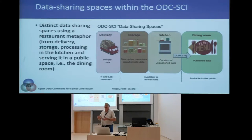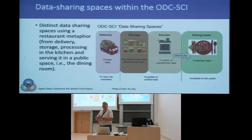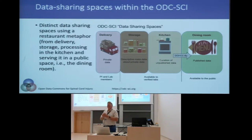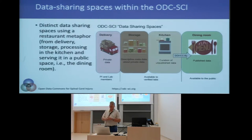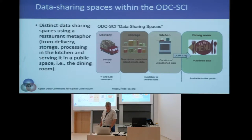How do you explain data sharing to researchers? Mary Ann came up with one of the best analogies — comparing it to a restaurant. When ingredients arrive, that's the private space — the back end where things show up on the loading dock. Then things are in the prep kitchen where you can see a little more of what's happening. And when data becomes public, it goes out into the dining room. So you have these different stages in terms of how the data flows.